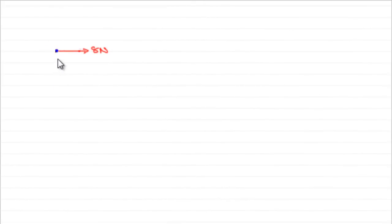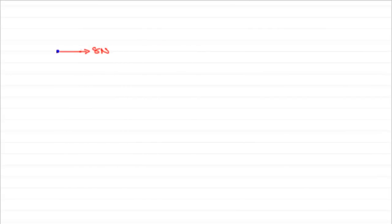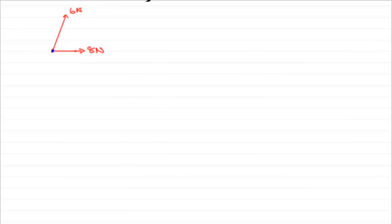Suppose I've got a particle being acted upon by a force of 8 newtons — what's going to happen? Well, that particle is going to want to move to the right. But if we wanted to keep it in equilibrium, in other words stationary, we'd have to apply an equal and opposite force of 8 newtons. But what happens if that 8 newtons wasn't there and we had a force of 6 newtons acting at 65 degrees to the 8 newton force?